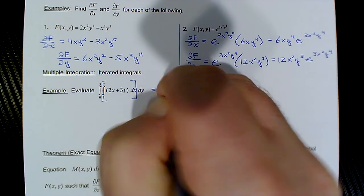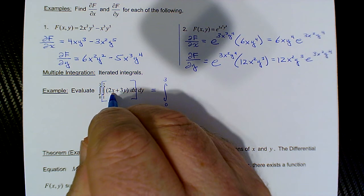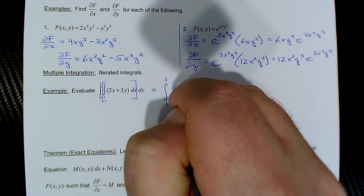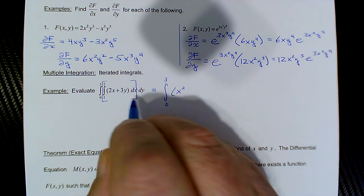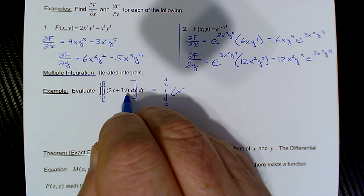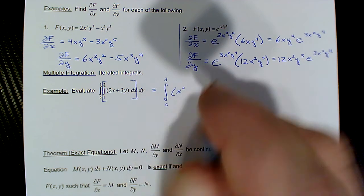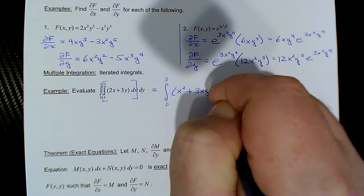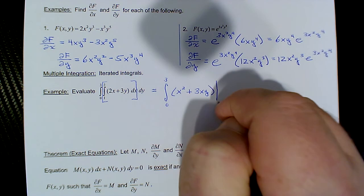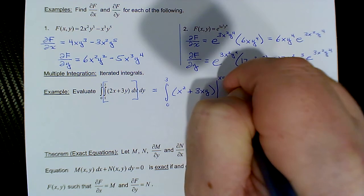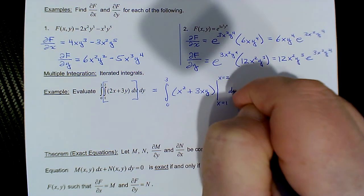We recopy the integral from 0 to 3. We integrate 2x as normal with respect to x and we get x² (that is, 2x²/2). Since y is a constant, integrating −3y gives us −3yx, or 3xy, because when we integrate a constant we pick up the variable of integration. So 3xy, evaluated as x ranges from 1 to 2.